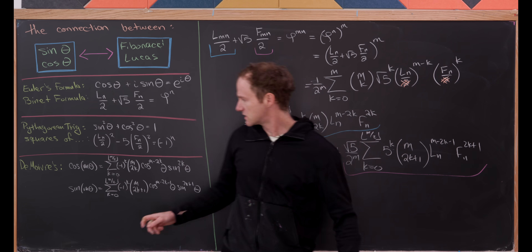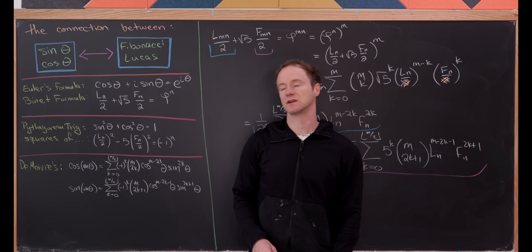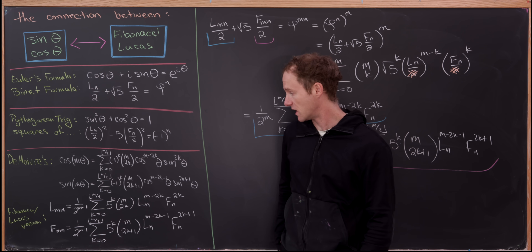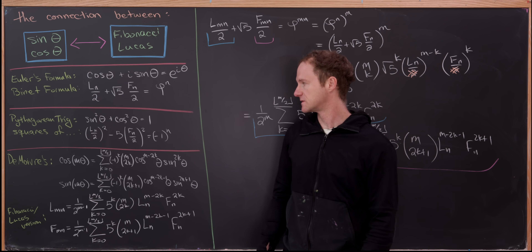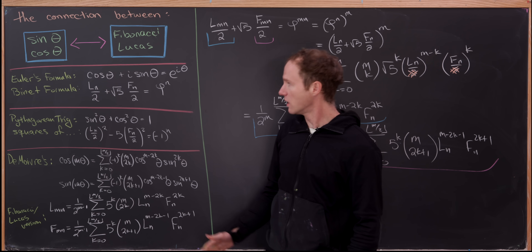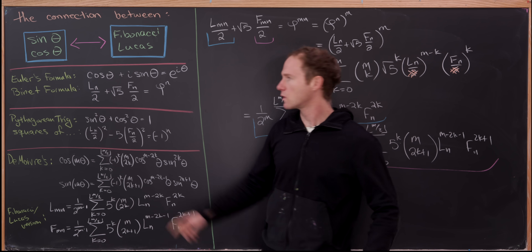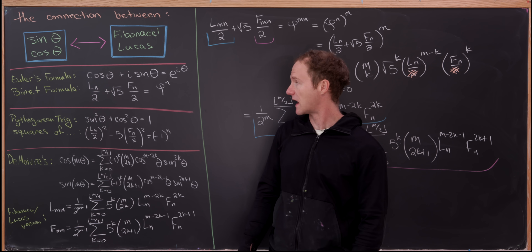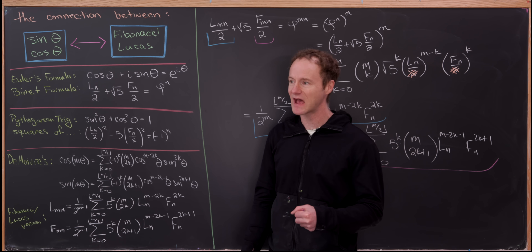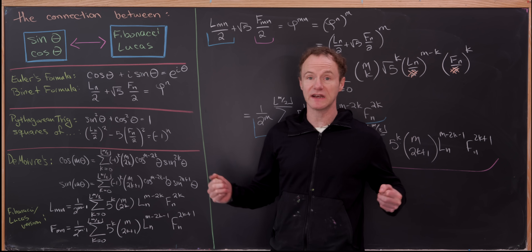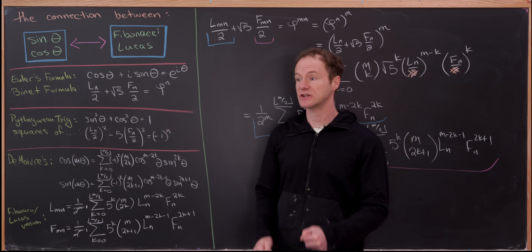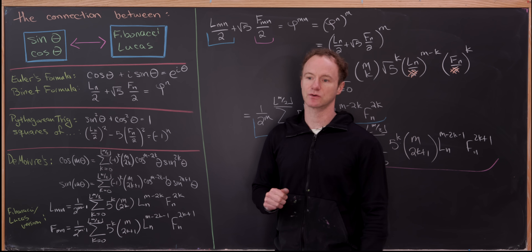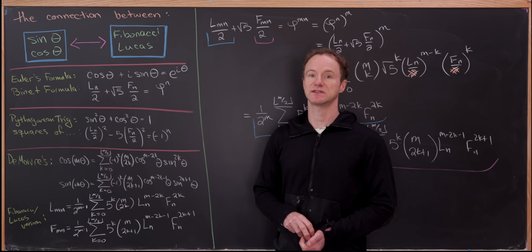That gives us L_{mn}/2 equal to the even sum and F_{mn}/2 equal to the odd sum — our Fibonacci and Lucas version of the cosine and sine expansion formulas. Throughout all of this we see the role of cosine being played by the Lucas numbers and the role of sine being played by the Fibonacci numbers. In fact, you can take almost any trig identity and translate it into a Fibonacci-Lucas identity using this idea, and that's a good place to stop.